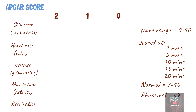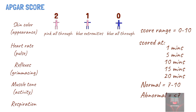The APGAR score is assigned as follows. For skin color, if the body and extremities are pink, it is given a score of 2. If the extremities are blue whereas the body is pink, it is given a score of 1. And if the baby is blue all over, it is given a score of 0.